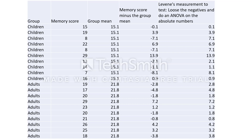This data is laid out in a format you would expect if you were entering it into a computer program like SPSS. On the left hand side we have a grouping variable, and every row represents the data of a participant included in the study. We have a number of children and a number of adults who have all had their memory tested. We've recorded how many words both groups could remember and calculated the group mean. On average, children are recalling 15.1 pieces of information, and adults are recalling 21.8 words from the list.